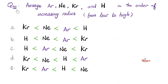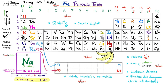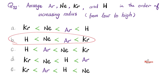Next question: can you arrange argon, neon, krypton, and hydrogen in order of increasing radius from lowest to highest? Remember your periodic trends — as you go down the periodic table, atomic radius increases. So krypton is larger than argon, which is larger than neon, which is larger than hydrogen. The correct answer is B.